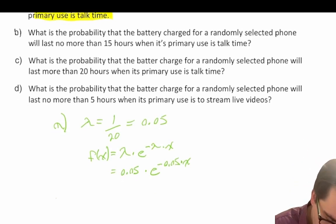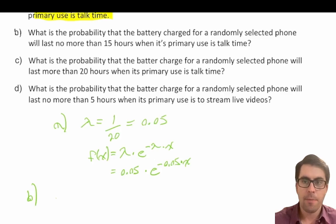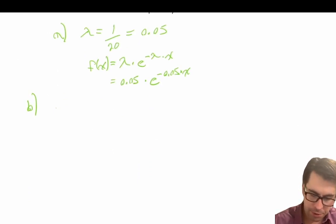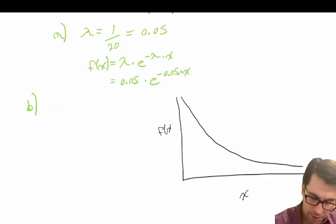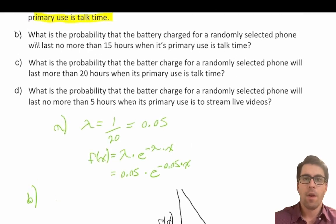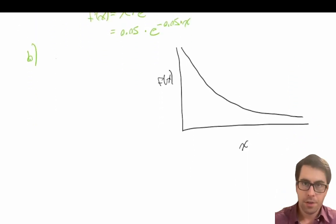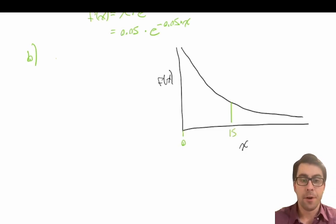Now let's look at question b: what is the probability that the battery life for a randomly selected phone will last no more than 15 hours when its primary use is talk time? Let's draw the exponential distribution. We have time on our x-axis and f(x) on our y-axis. We're asked about lasting no more than 15 hours — in other words, we want the probability that it lasts between 0 and 15 hours.